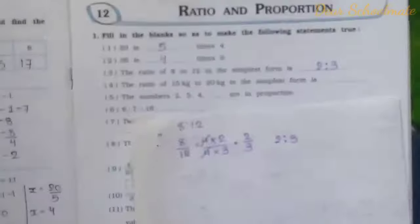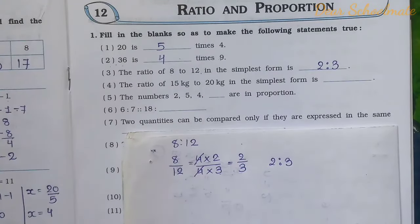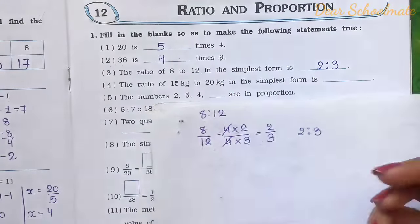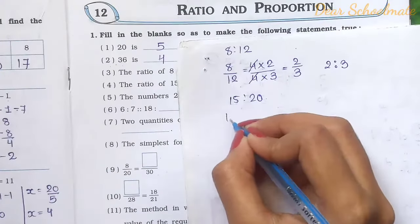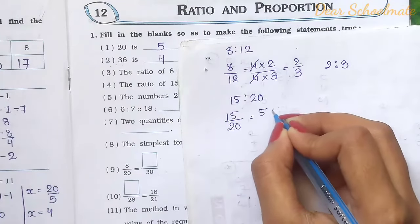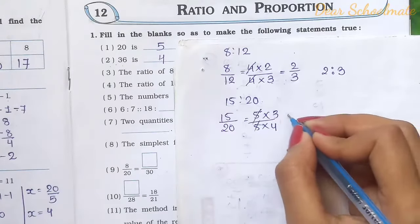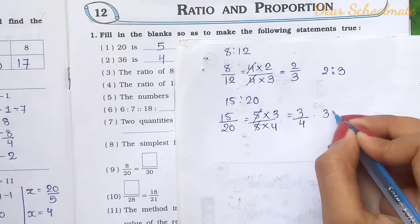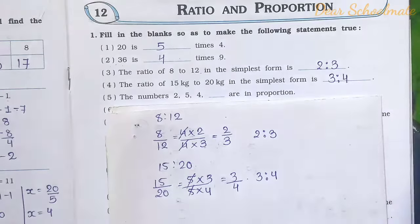Number 4: The ratio of 15 kg to 20 kg in the simplest form. We write 15 by 20 as a fraction and cancel by 5: 5 threes are 15, 5 fours are 20. The 5s cancel, leaving 3 by 4. So the simplest form is 3 is to 4.